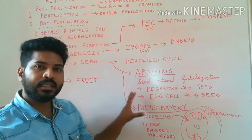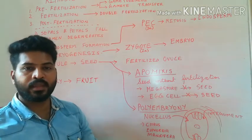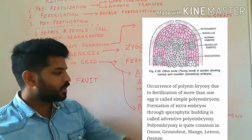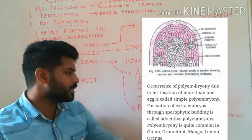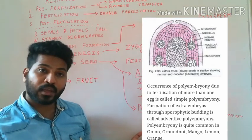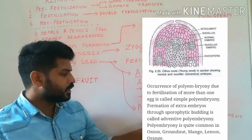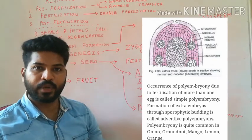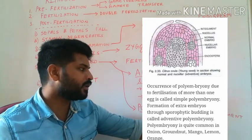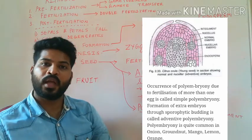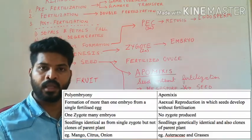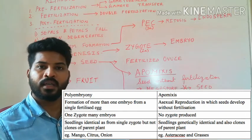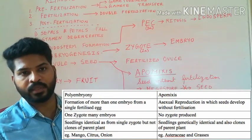Other than apomixis, there is another phenomenon called polyembryony. In this case, the embryo is developed not from the egg cell and not from double fertilization. In citrus plants, mango, and euphorbia plants, the cells of the nucellus enter into the embryo sac and develop into an embryo. Sometimes even cells from the integument can enter into the embryo sac and develop into embryos. This is called polyembryony. For example, if you open the seed of an orange, you can see many embryos inside because of this nucellar development.